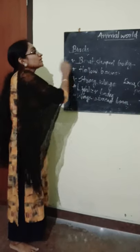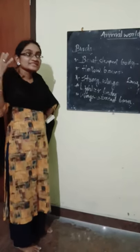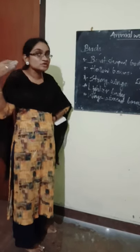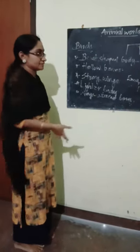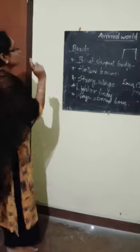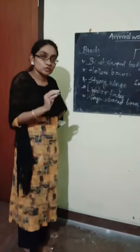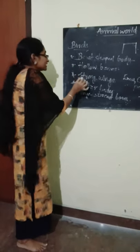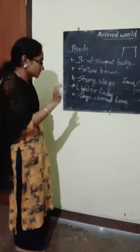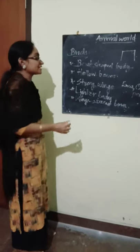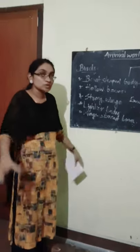These are all the adaptations a bird needs to fly. First, a board-shaped body — this shape helps them to move through the air. Second, hollow bones — the bones are filled with air and are hollow. Third, strong wings. Fourth, lighter body — their body is very light in weight. Fifth, their wings are attached to the strong breast bone, which helps them to flip their wings. These are the things about birds.